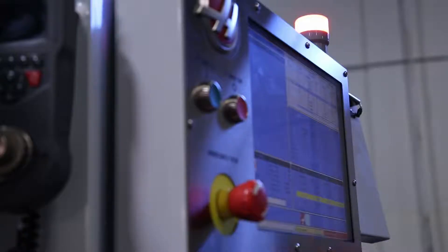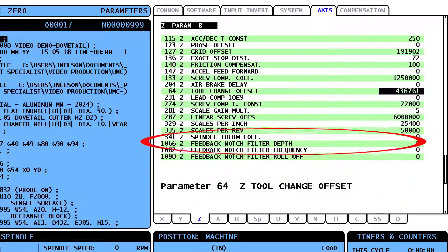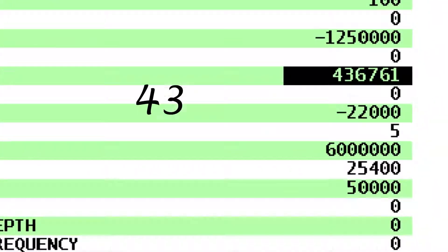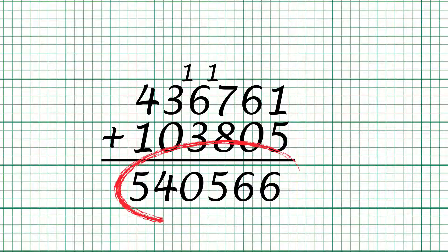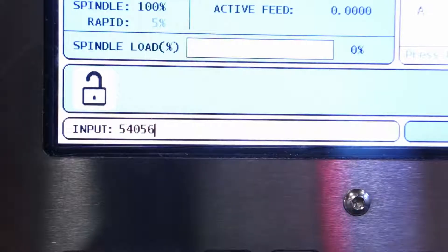Press emergency stop. Now add the number to the current value in parameter 64. If the number is negative, subtract it from the current value in parameter 64. So for this particular machine, I'll change parameter 64 to this value.